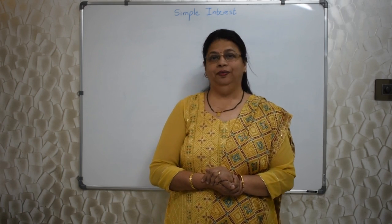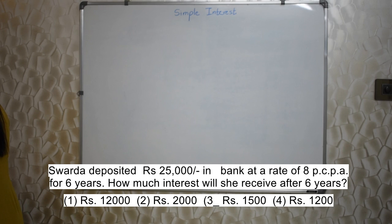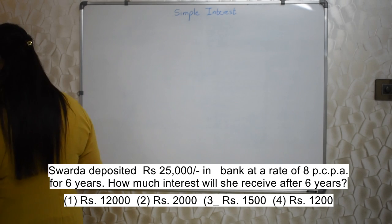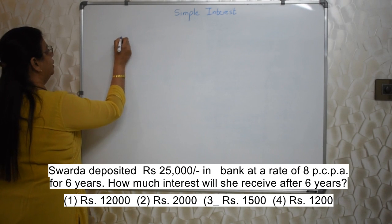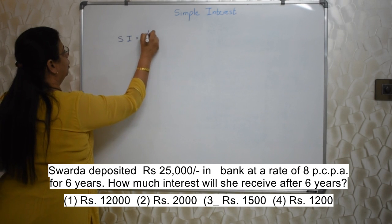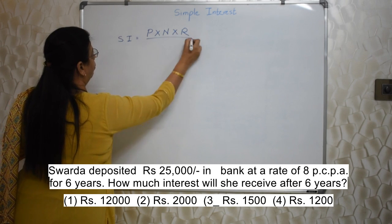So let's begin. The first question: Swarada deposited ₹25,000 in a bank at a rate of 8% per annum for 6 years. How much interest will she receive after 6 years? As I told you earlier, this topic is based on formula. In this particular sum, we are supposed to find out the interest. So what is the formula for Simple Interest? Simple Interest is equal to Principal into Number of years into Rate upon 100 (SI = P × N × R / 100).